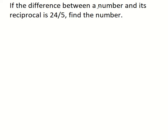If the difference between a number and its reciprocal is 24 by 5, find the number. So the number you can take as x, the reciprocal is 1 by x. Difference means x minus 1 by x is equal to 24 by 5.